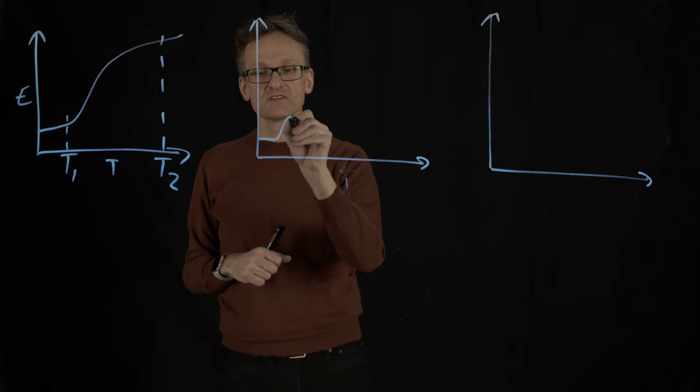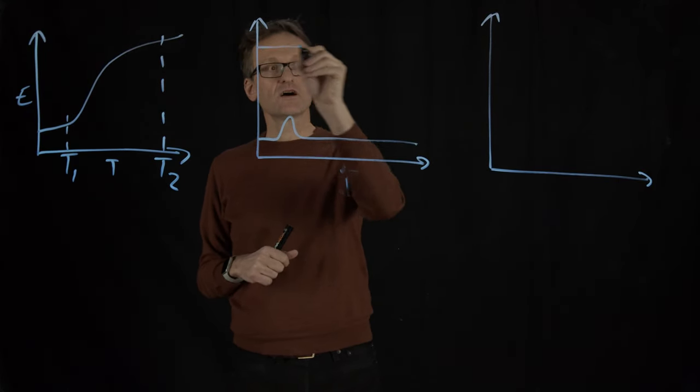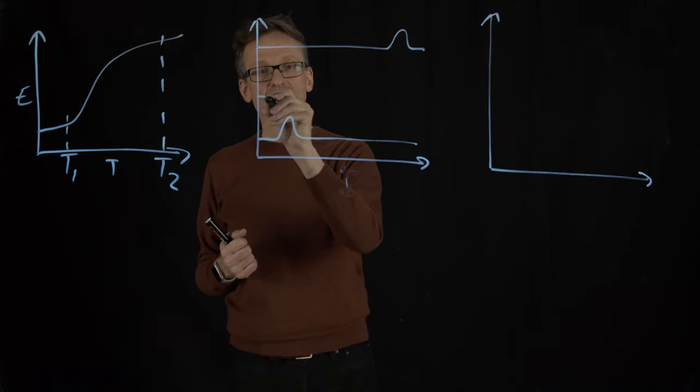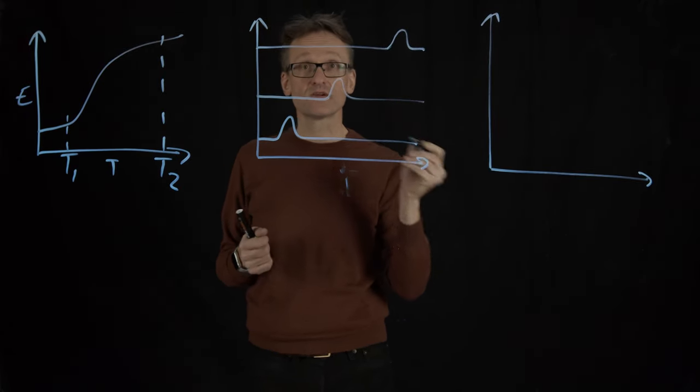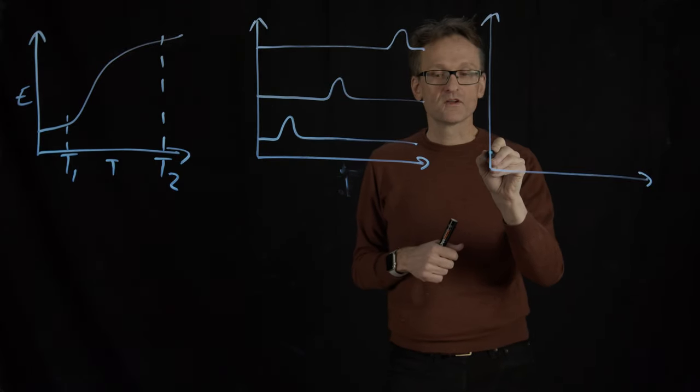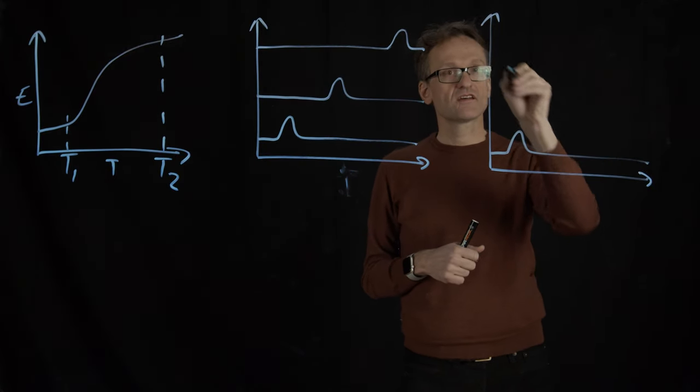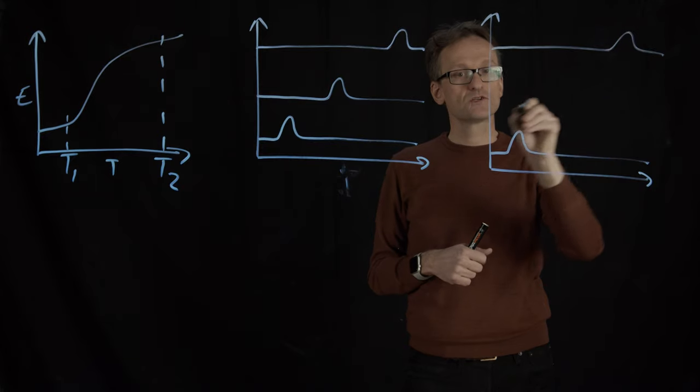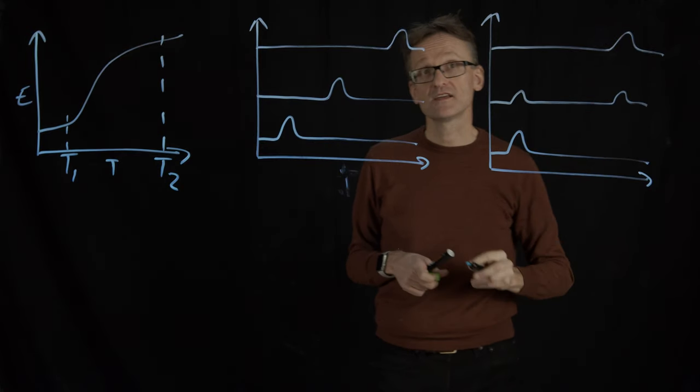If you started out in state one and I ended up in state two for a continuous process, if I stopped that halfway through I would literally be in the middle. But for an all or none transition I would start in one and up in two, but halfway between them I would have half the population in each.